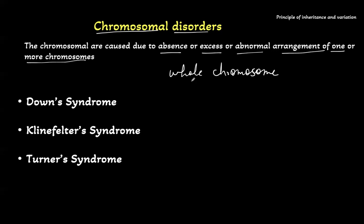So here there will be a chromosome less, or maybe a chromosome more, or maybe the whole chromosome is abnormal. Examples are Down syndrome.